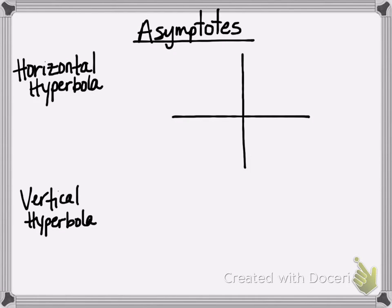Now let's take a look at the asymptotes of a hyperbola. We'll begin with a hyperbola that is horizontal.